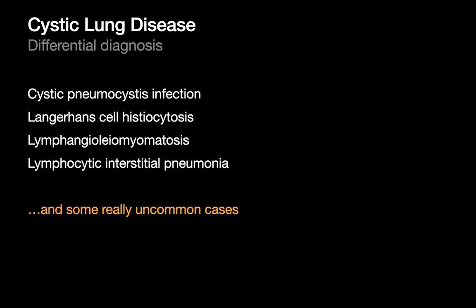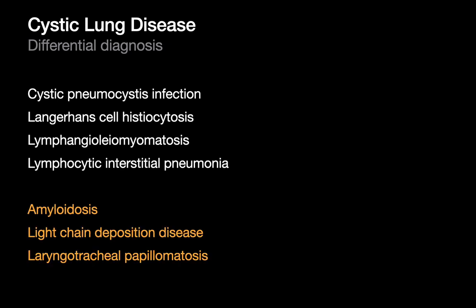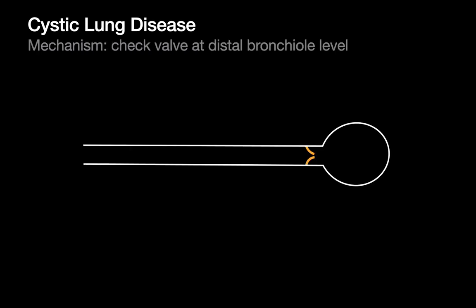For acquired cystic disorders, we'll start with cystic lung disease. The four diagnoses to begin with are cystic pneumocystis infection, LCH, LAM, and LIP. There are more cystic lung diseases than just these four, but we'd like to focus on these top four diseases.